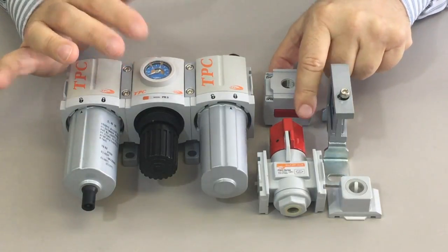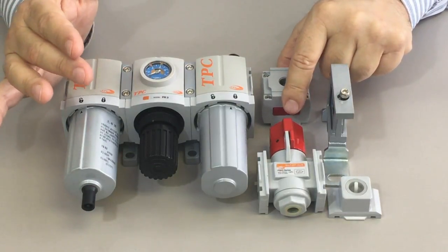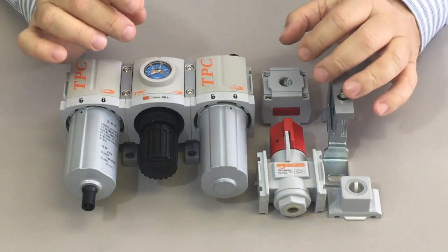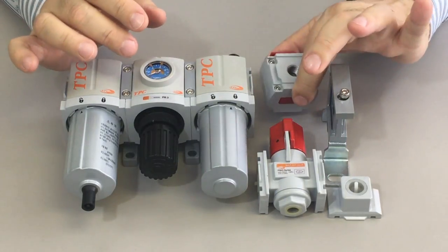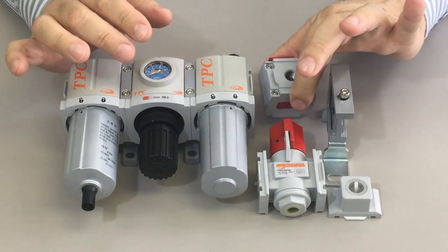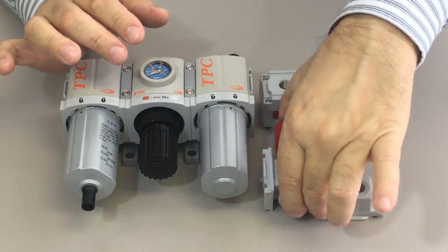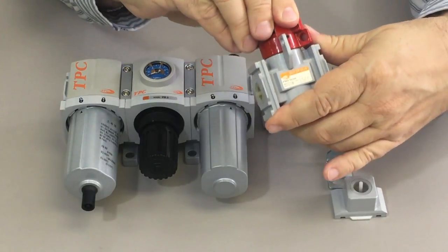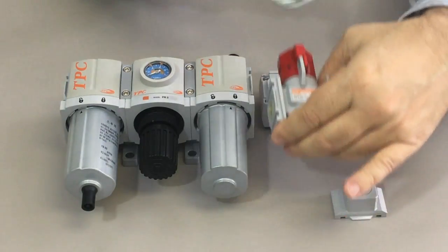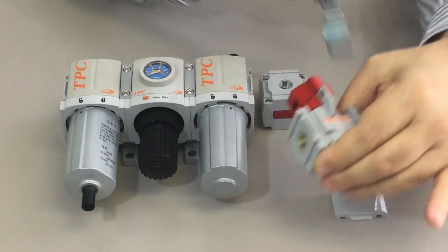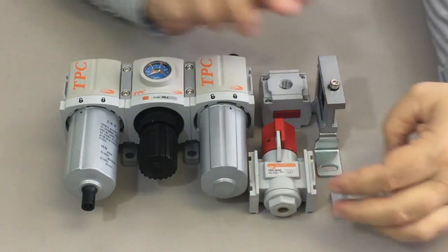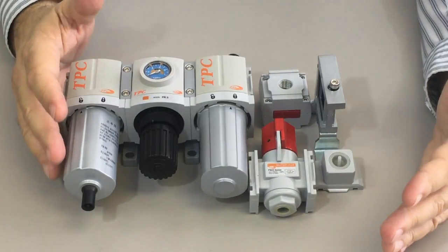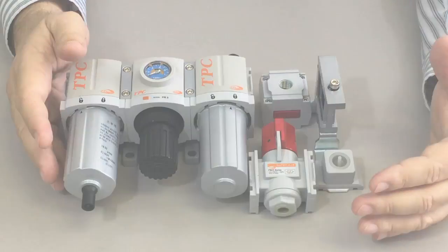But we make a number of other components that can be added into your FRL line, depending on the specifics of your application. For example, this is a lockout valve. Here's a shutoff valve. This is typically put on the front end to stop air altogether from coming in. And all of this can be matched up using the T-bracket or the C-clamp that I mentioned. I thought I'd just show you a pipe adapter. Many, many pieces like this available with TPC FRL.